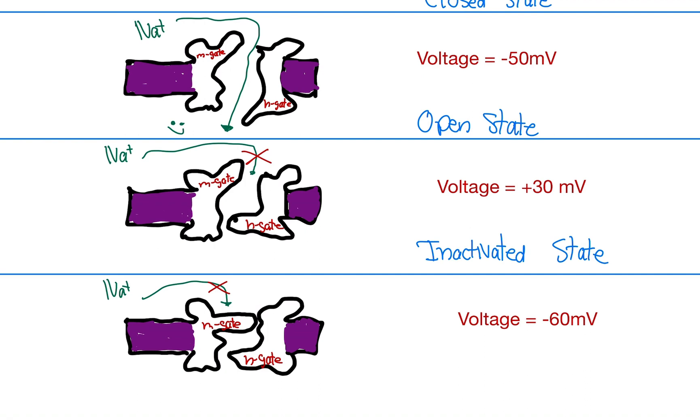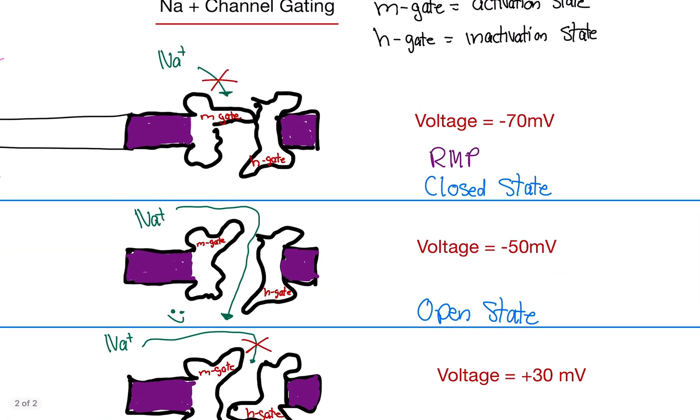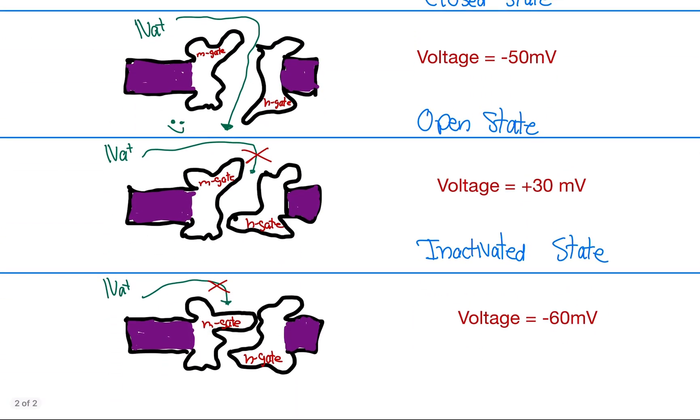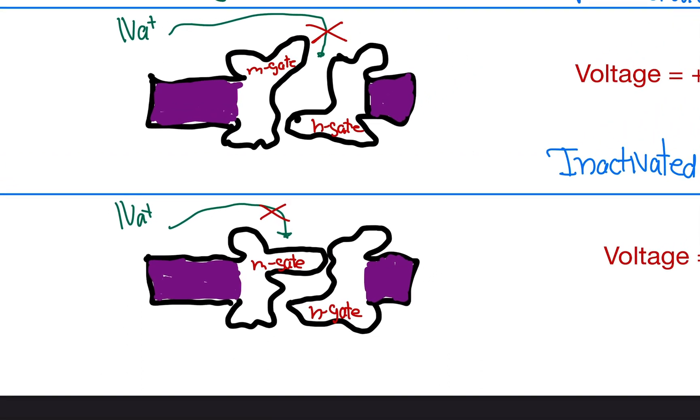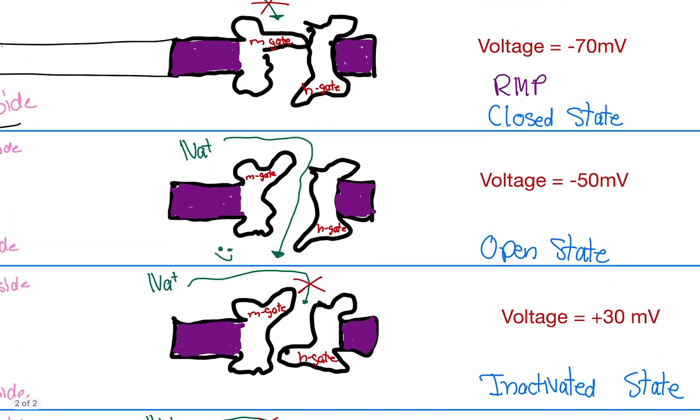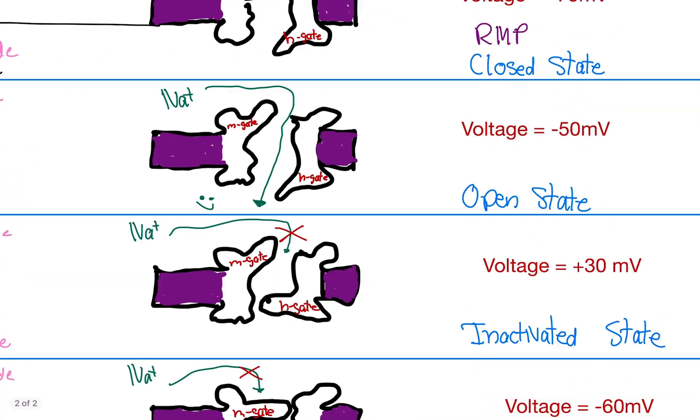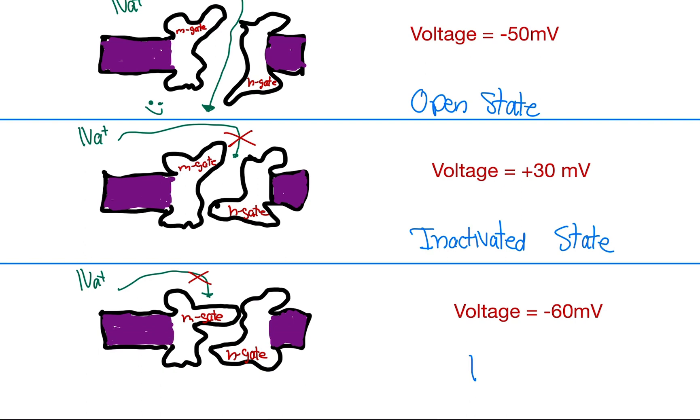Last but not least, if you go to negative 60 millivolts, so right before resting membrane potential, resting membrane potential is negative 70, we're at negative 60. Both gates are closed. The M gate is closed, and the H gate is closed. So sodium cannot go through. It's going to be stuck on the outside. This is the exact same as the top. So this is the closed state. This is when basically the sodium channels begin to close. This is the first scenario where it's closed, at negative 60 millivolts.